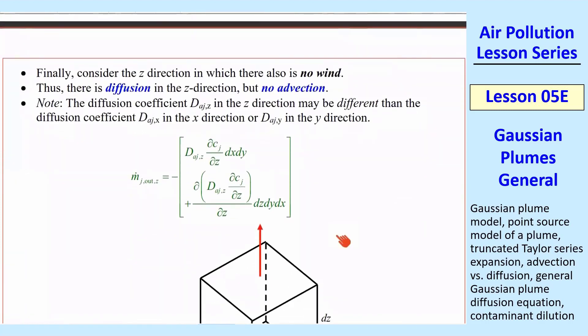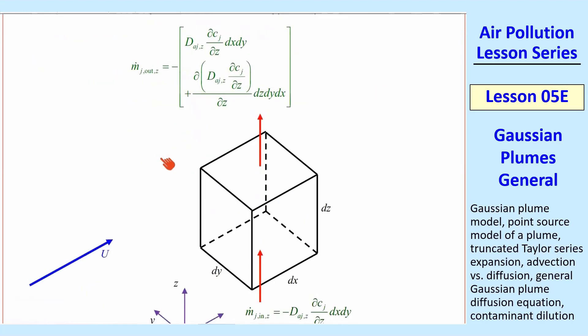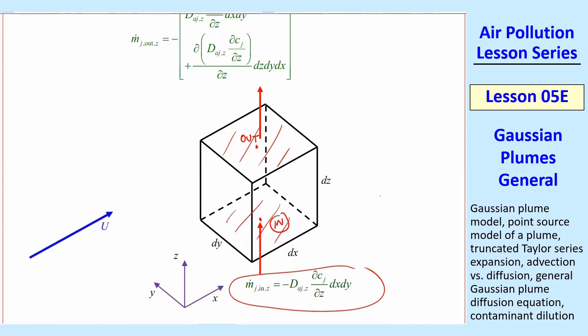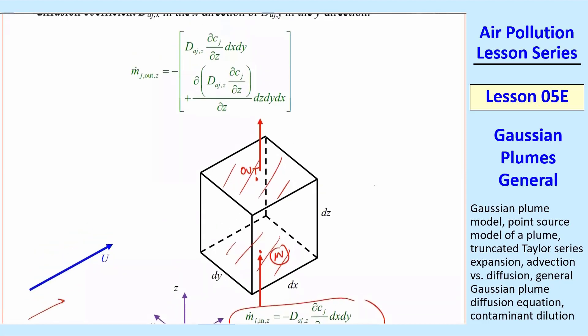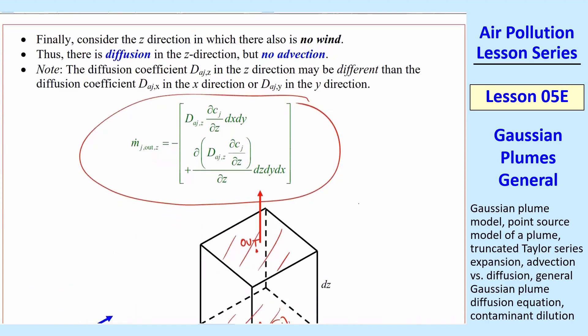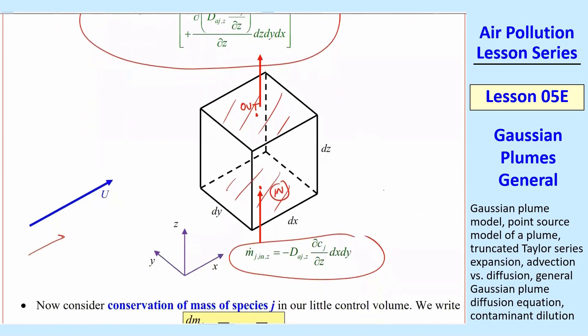It's a simple matter to do the z direction. I just copied and pasted, changed the color and changed all the y's to z's. Very quickly here, we have our in, what's coming in to this bottom face at the center point, and what's coming out at the top face. I used green color here as our diffusion term. Again, there's no advection since u is only in the x direction. There's no u. All there is is diffusion in the z direction. So we have that coming in. Then we use a Taylor series expansion, first order truncated, exactly like we did before. And that gives us the mass flow rate coming out due to diffusion in the z direction.